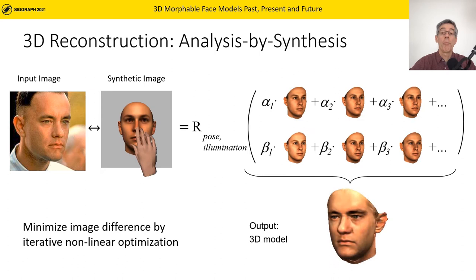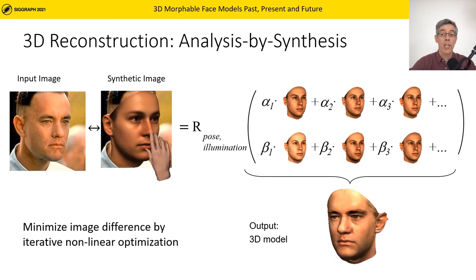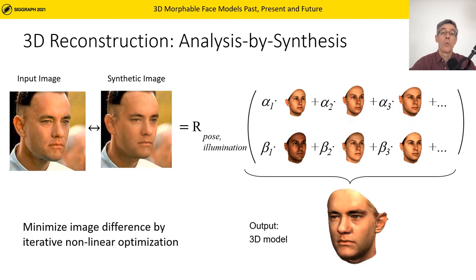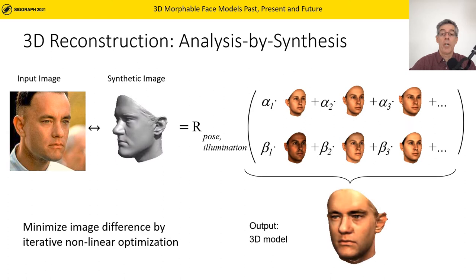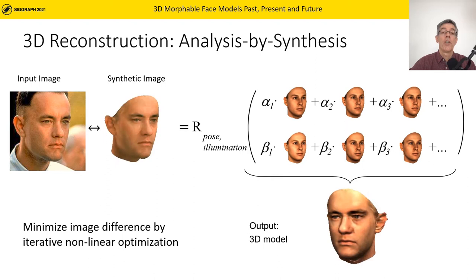3D reconstruction from a single image is an ill-posed problem, but the morphable model restricts the solutions to morphologically plausible faces. The idea of analysis by synthesis is to reproduce an image as similar as possible to the input. Each linear combination of faces can be rendered using rendering parameters such as pose and illumination, and we minimize the difference between the synthetic image and the input image using an iterative optimization. Other more recent approaches use direct estimations of model parameters from the image.